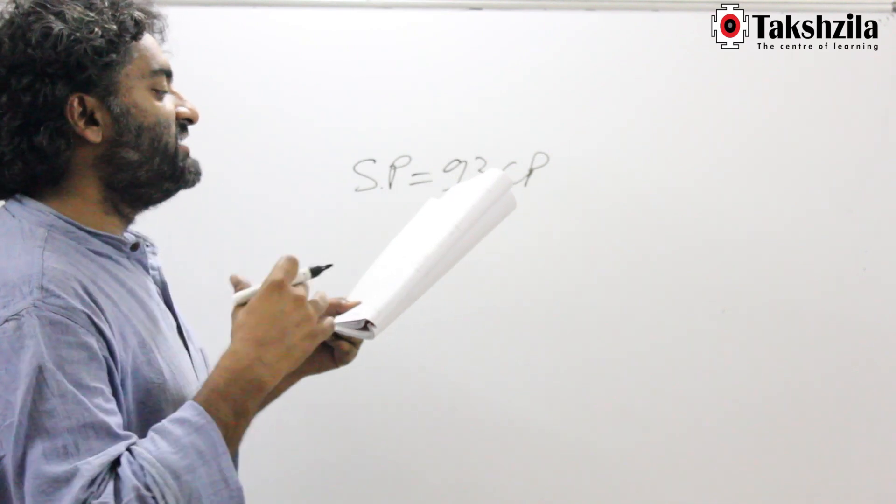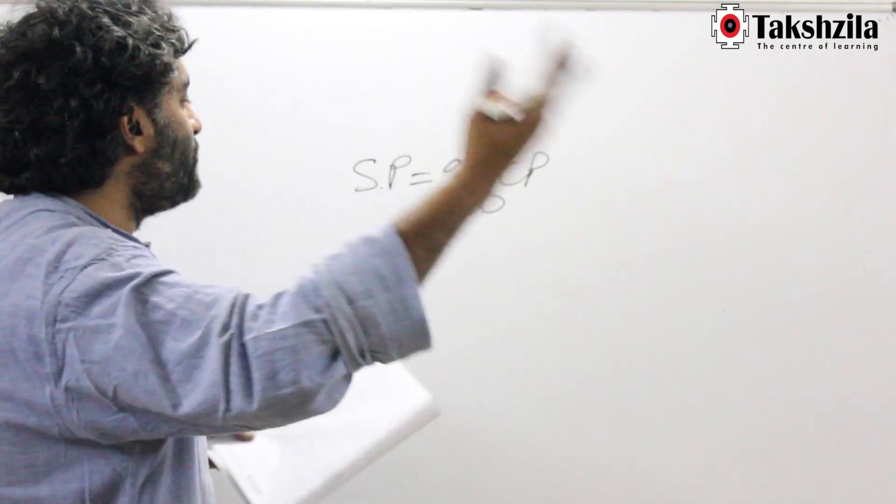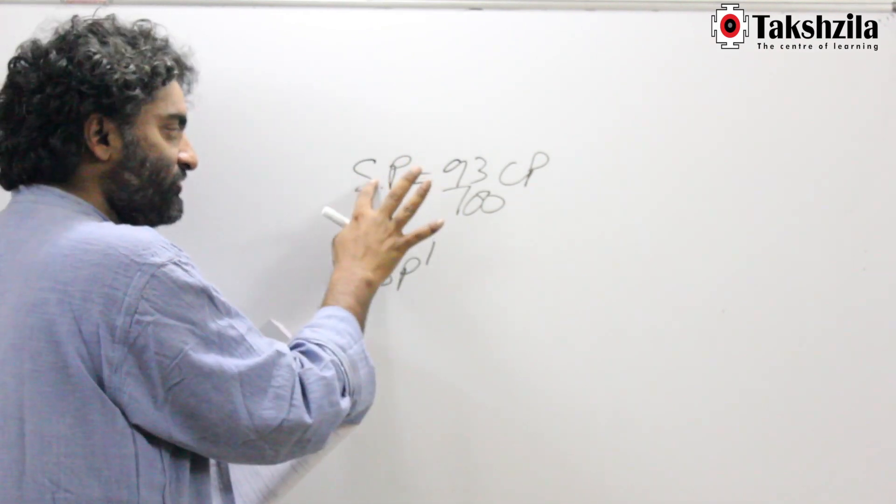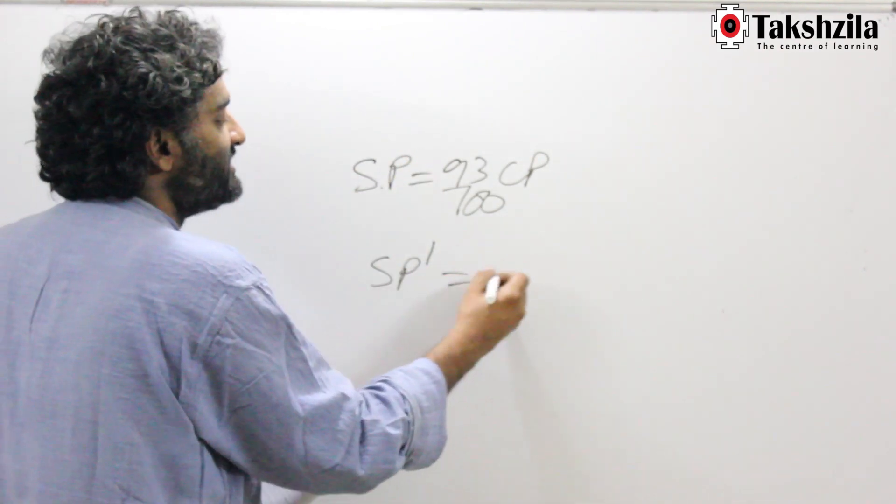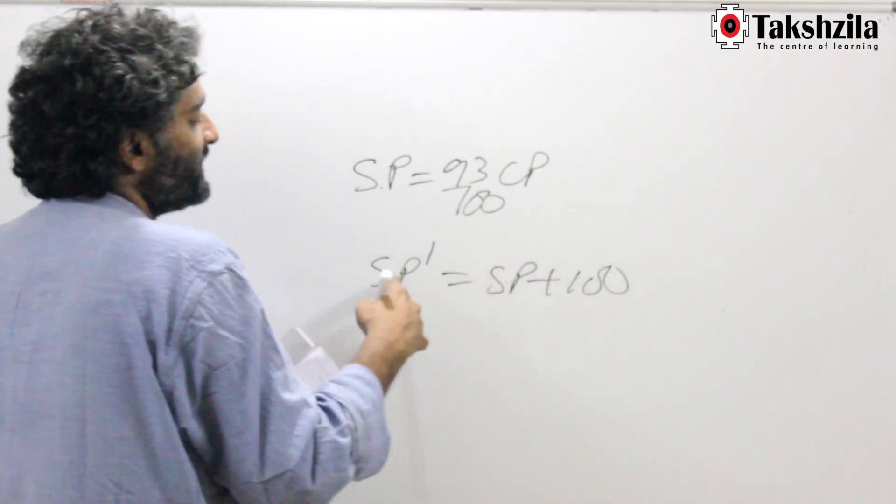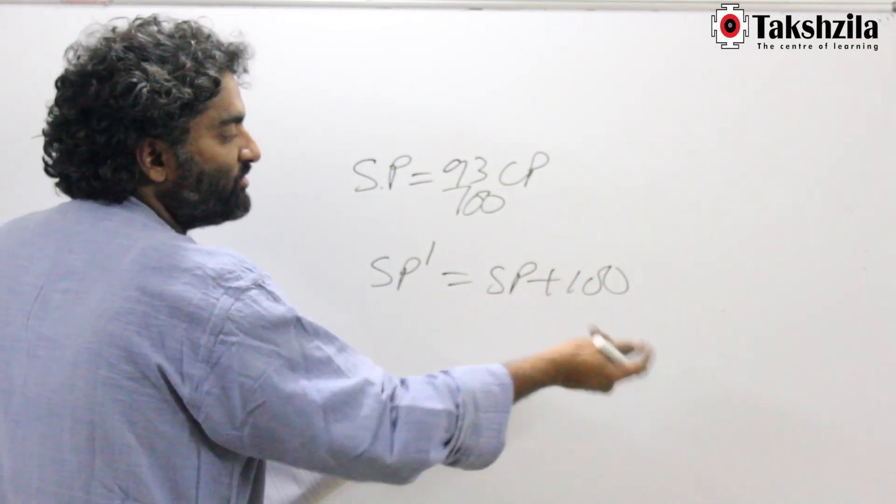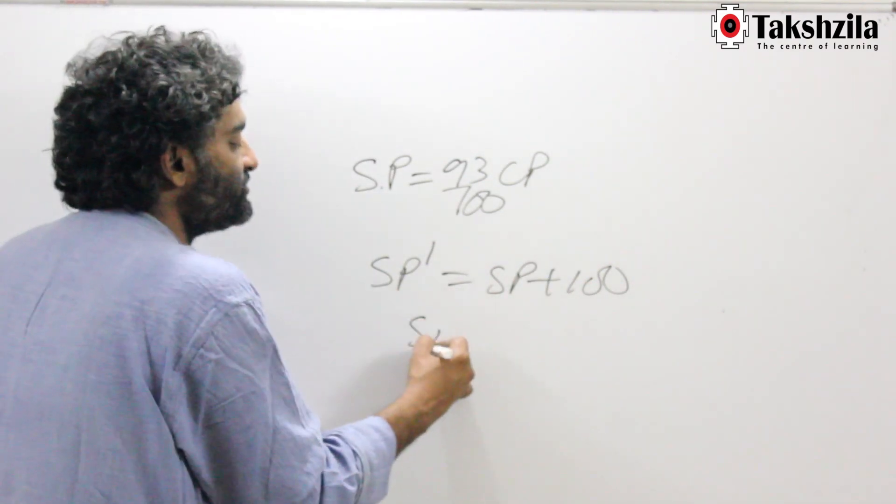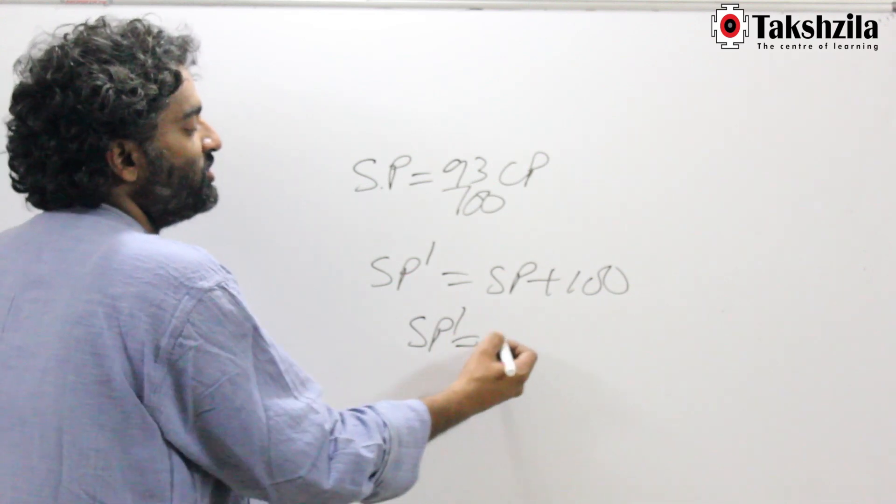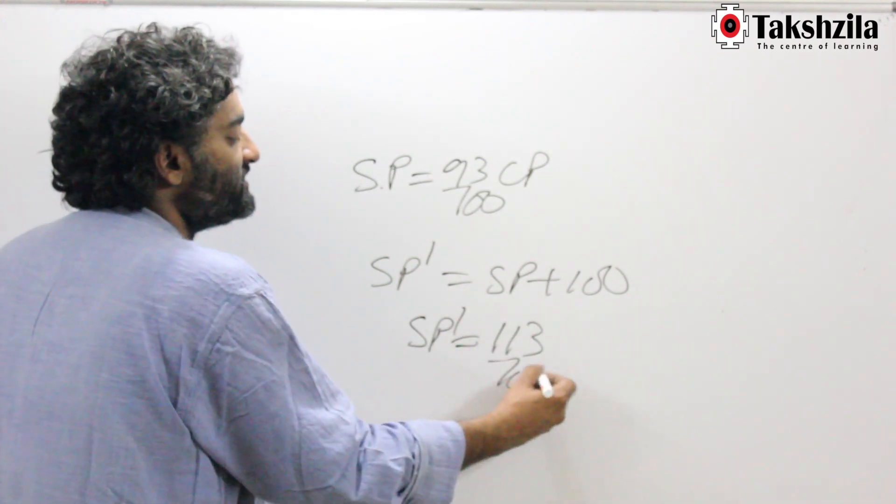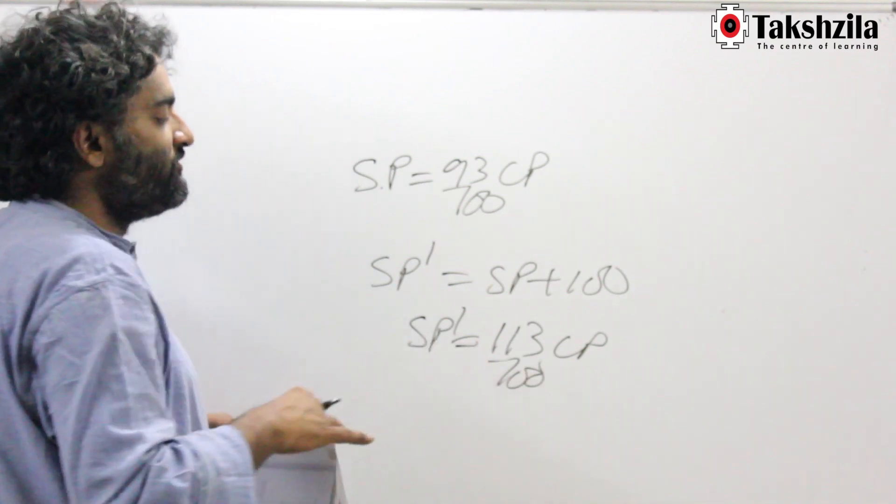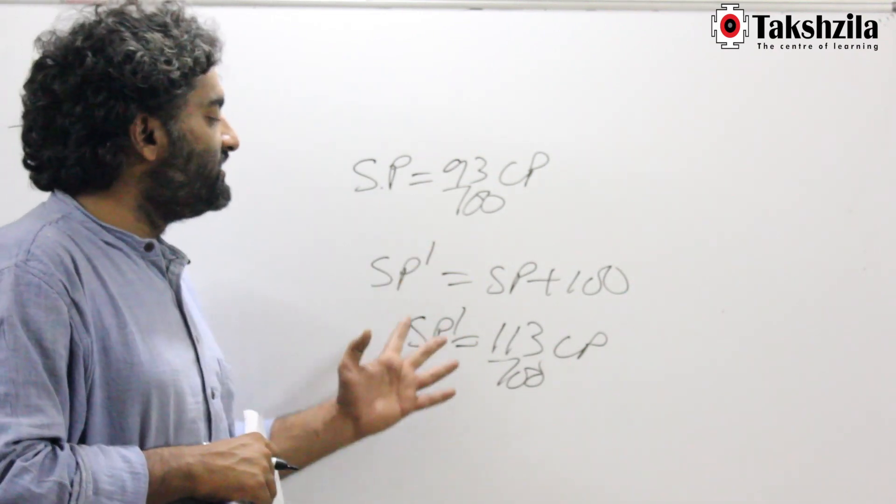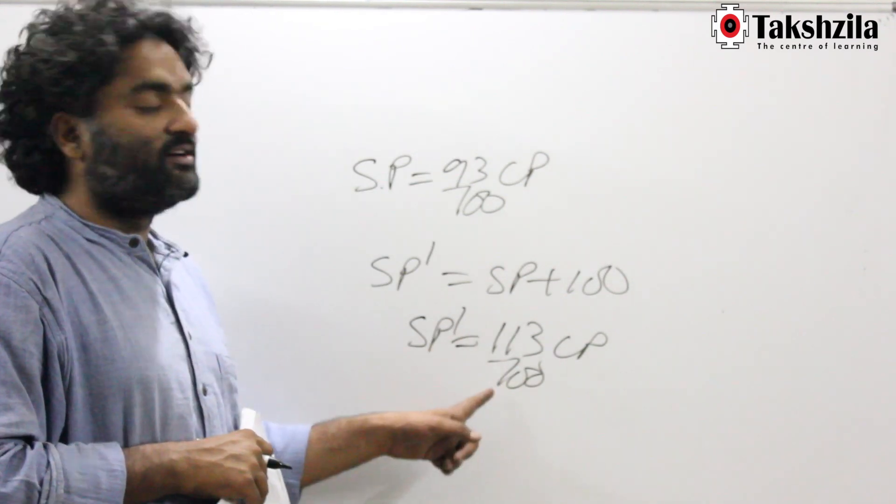When it is sold at rupees 100 more, that means there is another selling price. First there was an old selling price, now there is a new selling price also, and the relationship is given as: the new selling price is 100 more. It results in a 13% profit. So I hope you know where it came from. I know 1% is 1 by 100, 13% would be 13 by 100, an increase of 13 by 100, so 113 by 100.